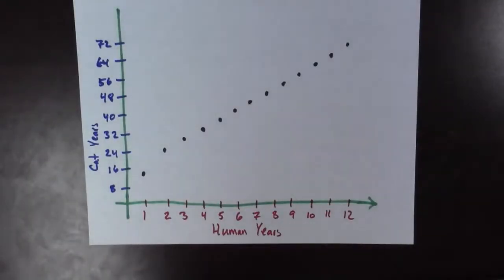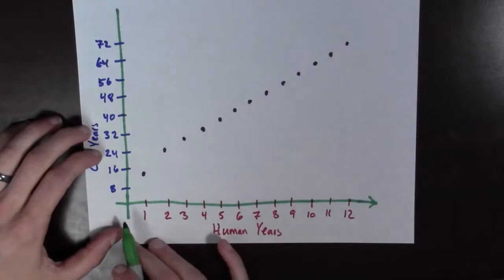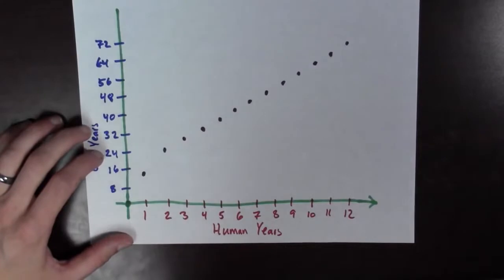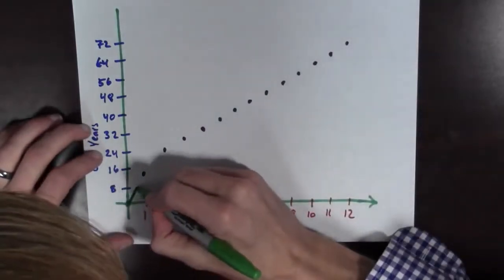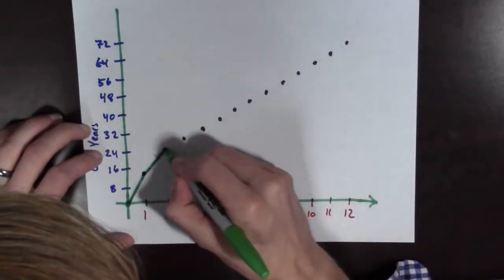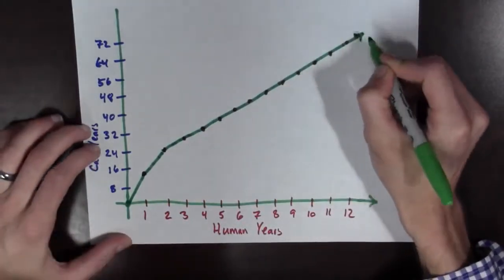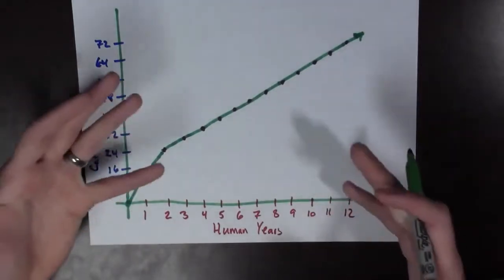So here we have our table, and it's all plotted. The first thing I should point out is that if a cat is zero human years old, then it's zero cat years old. So we should go ahead and mark that point. And now I don't know about you, but I just can't help myself. I want to connect the dots. So let's go ahead and do it. Let's connect the dots. Here I am, connecting the dots. Looking good. Looking good. Okay. Now look at this. These are all basically in a straight line at this point. So here we have a sort of a graph of the cat years to human years.